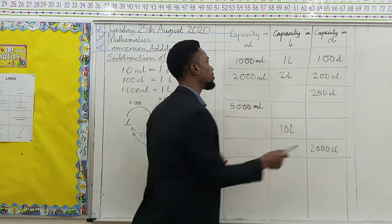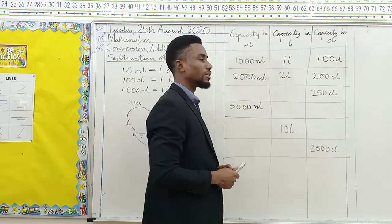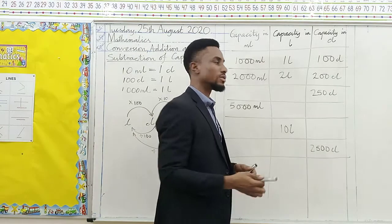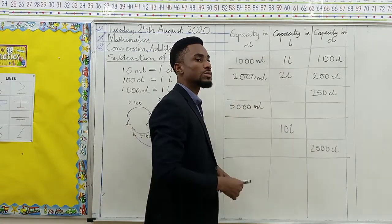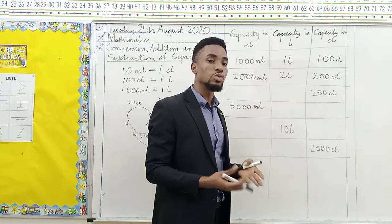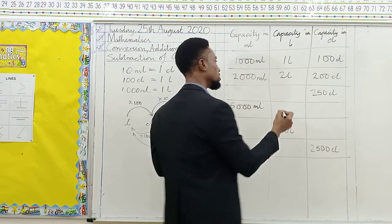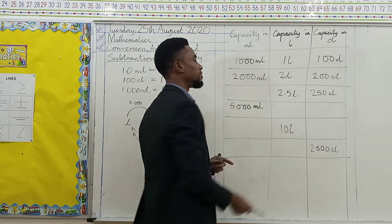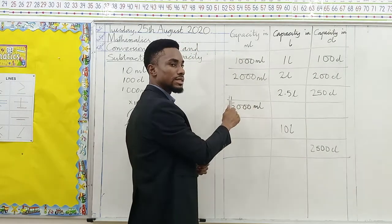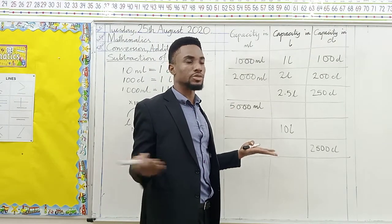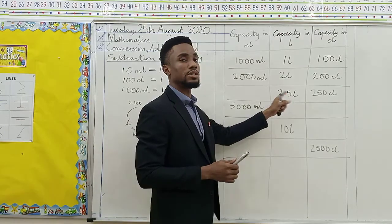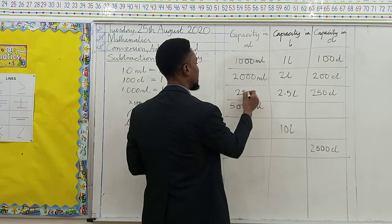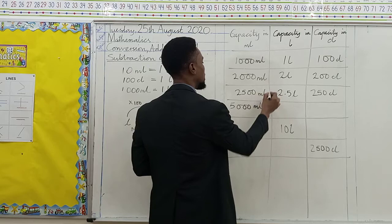Now we have 250 centiliters. How do we change it to liters? Changing from centiliters to liters, we divide by 100, or we take away 2 zeros. If we take away one zero from 250, we're left with 25, but there's no other zero to take away. So we introduce a decimal point — this is going to give us 2.5 liters. And then changing from 2.5 liters to milliliters, we introduce three zeros. The first zero takes away the decimal point, leaving us with two zeros. So our answer is 2,500 milliliters.